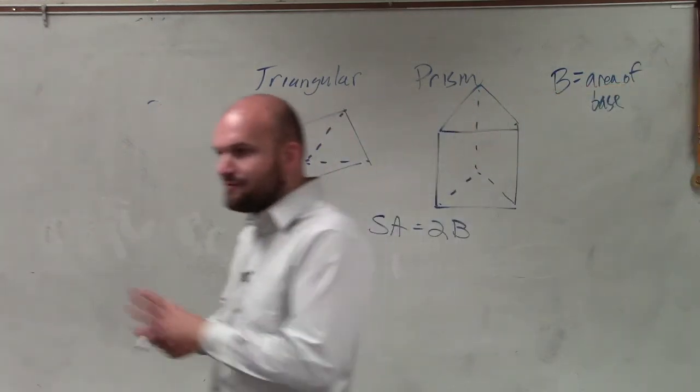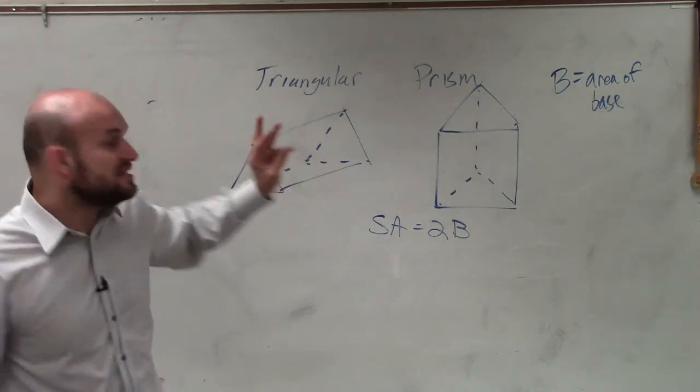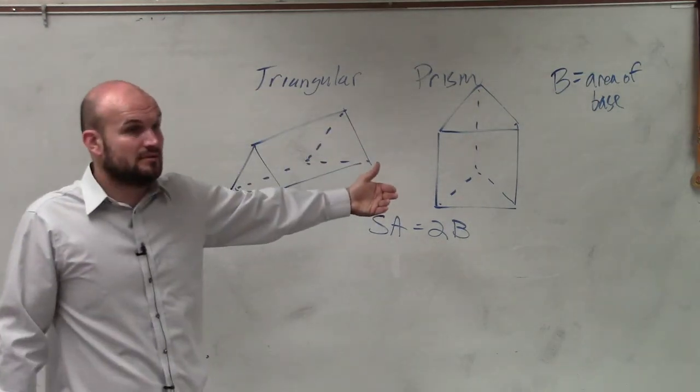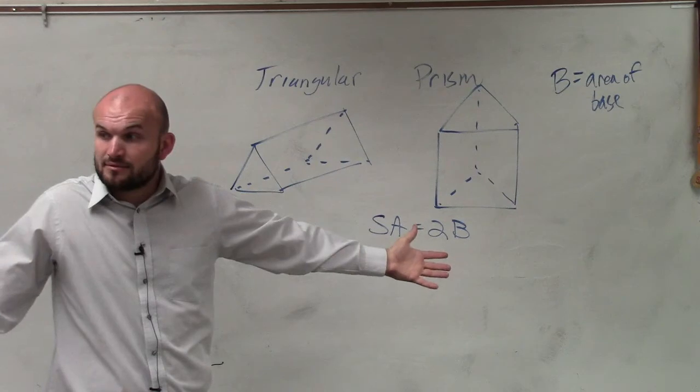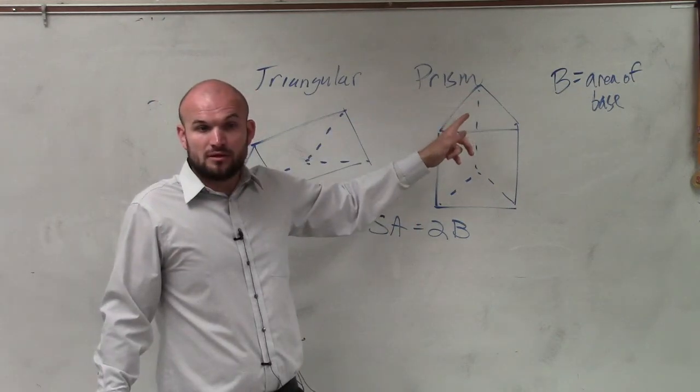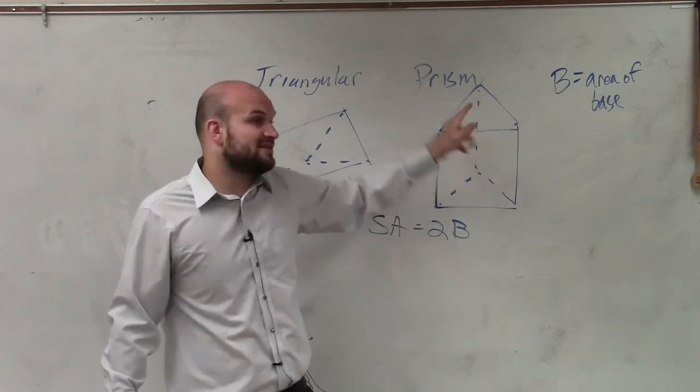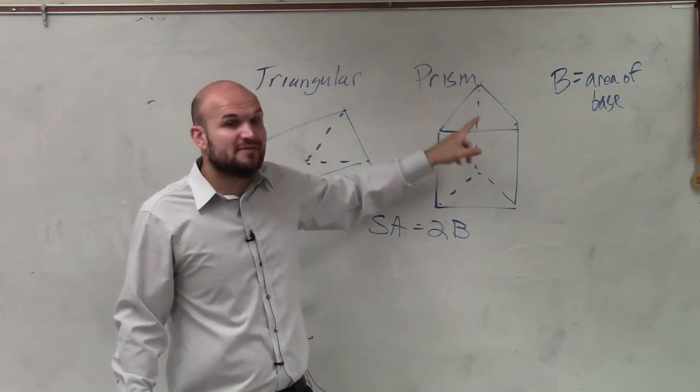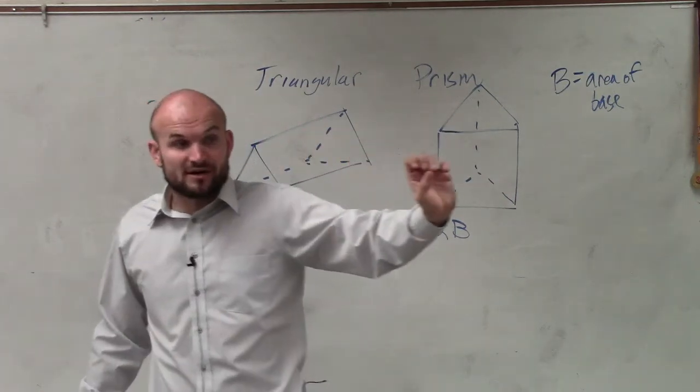Now, the next thing is we have three more sides. Now, these sides might be the same length, but they might not, right? So if this triangle is an equilateral, then obviously they're all the same. But if this is like a scalene, then each one of those areas could be different.